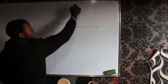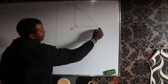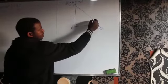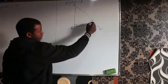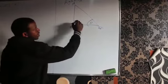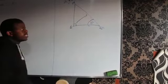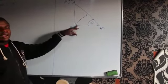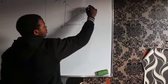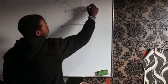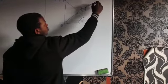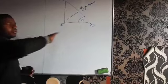For example this is a, b, c and you have an angle here which is angle theta. So the length that is opposite to the 90 degree angle is referred to as the hypotenuse.